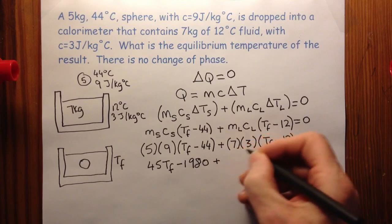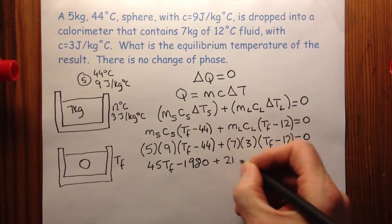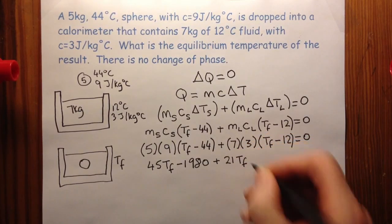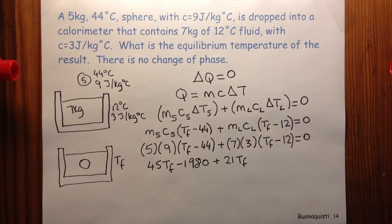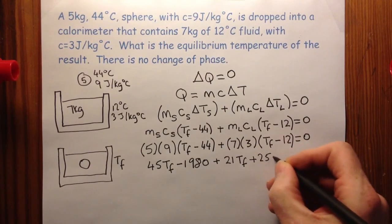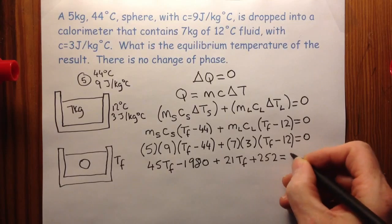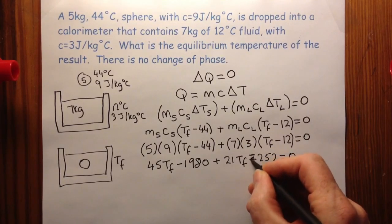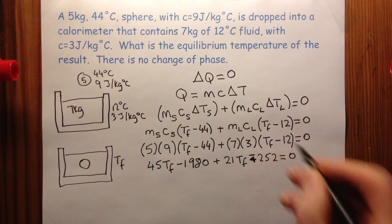And then I have 7 threes of 21. So that's 21 Tf. And then I have 21 times 12. So that would be 252. Sorry, that's minus 252 because of that negative sign there.